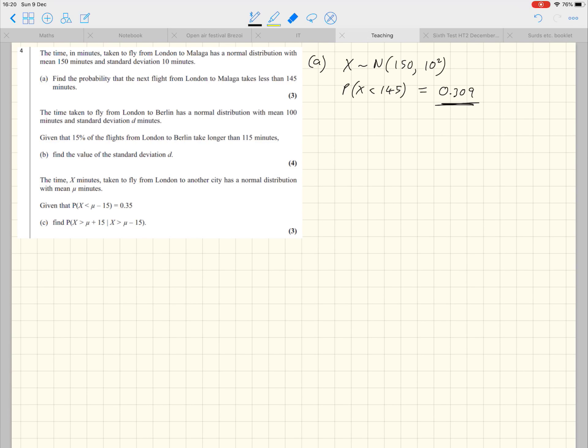Question four. Make sure you've read the information at the top. It's just a normal distribution. You're given the mean, you're given the standard deviation. Find the probability that the next flight takes less than 145 minutes. So I've defined a distribution here for X with mean 150 and standard deviation 10.